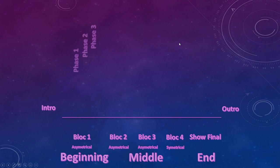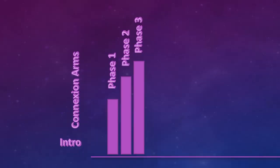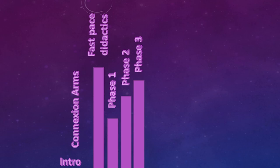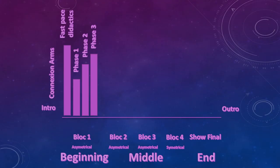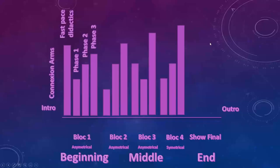Just after my intro, I use connections with my arms — I always like to play with arms. Then in the first sequence of my block I use high energy because I want people to be engaged, using what we call fast-pace didactics. In the second block I go to a lower level in my phase one because people are already engaged, so I bring the energy down. In the third block I put energy a little higher in phase one, lower in phase two, and higher again in phase three. The same pattern applies to the fourth block.